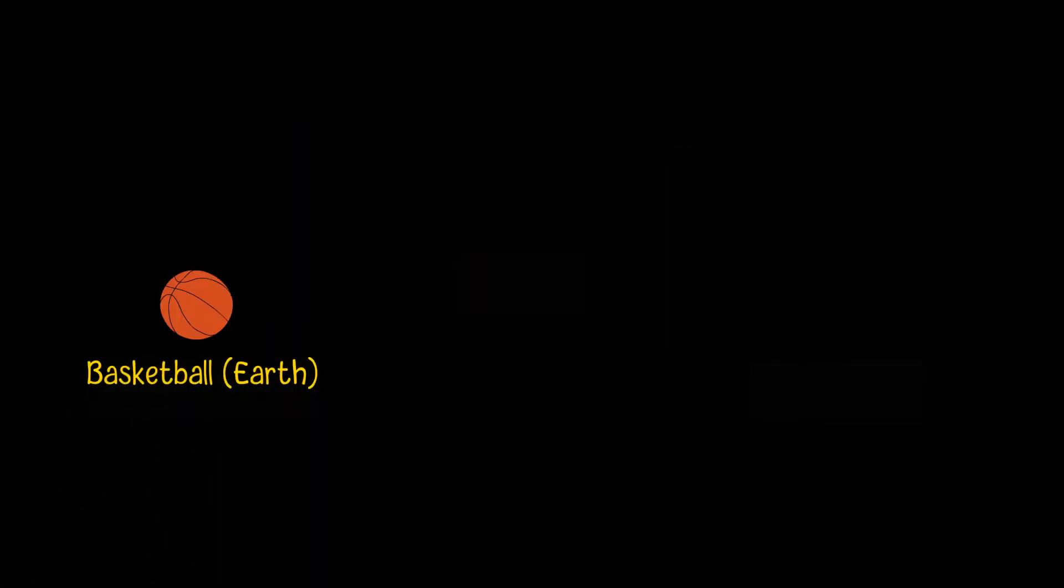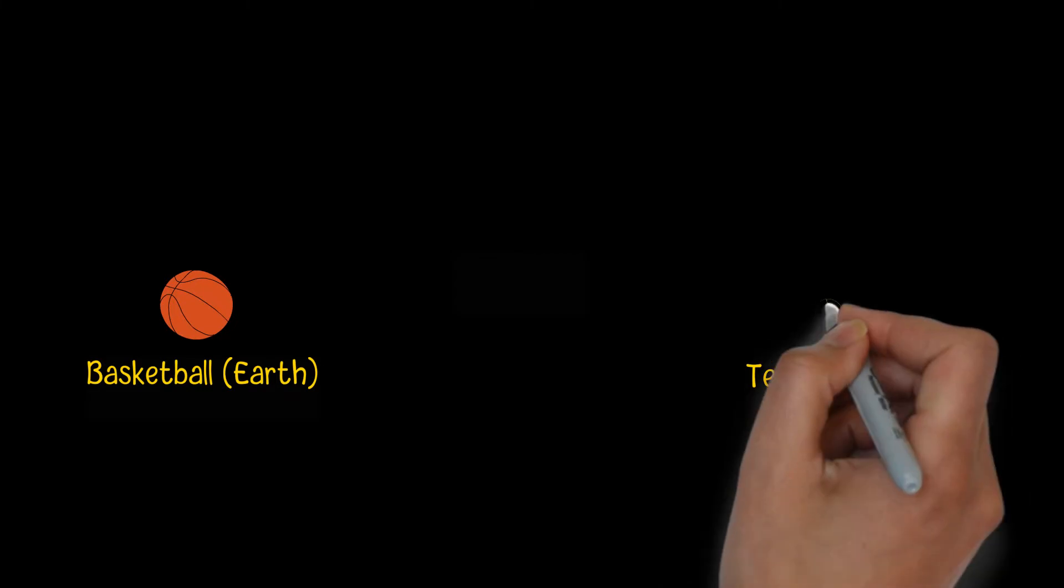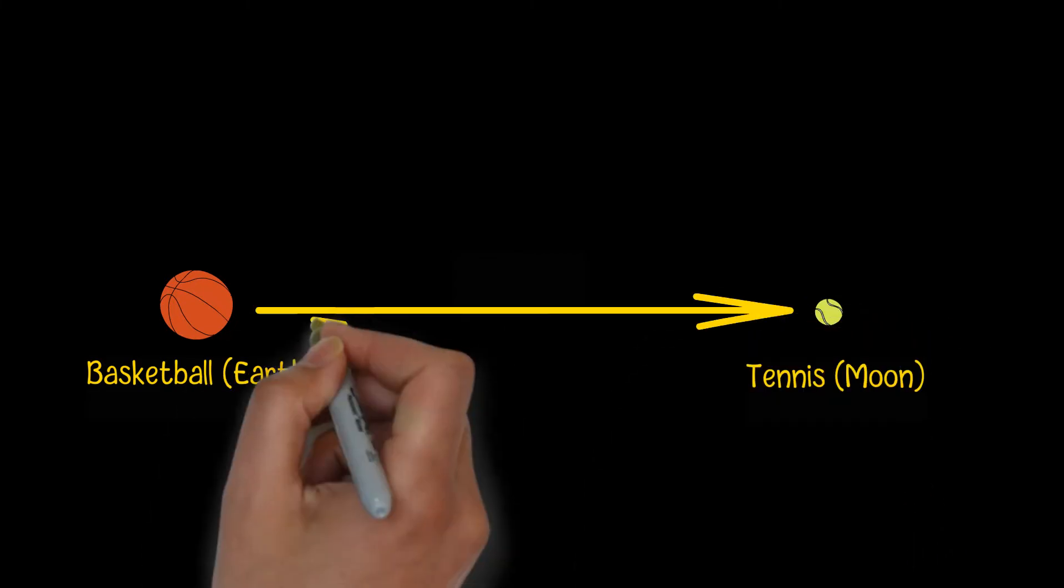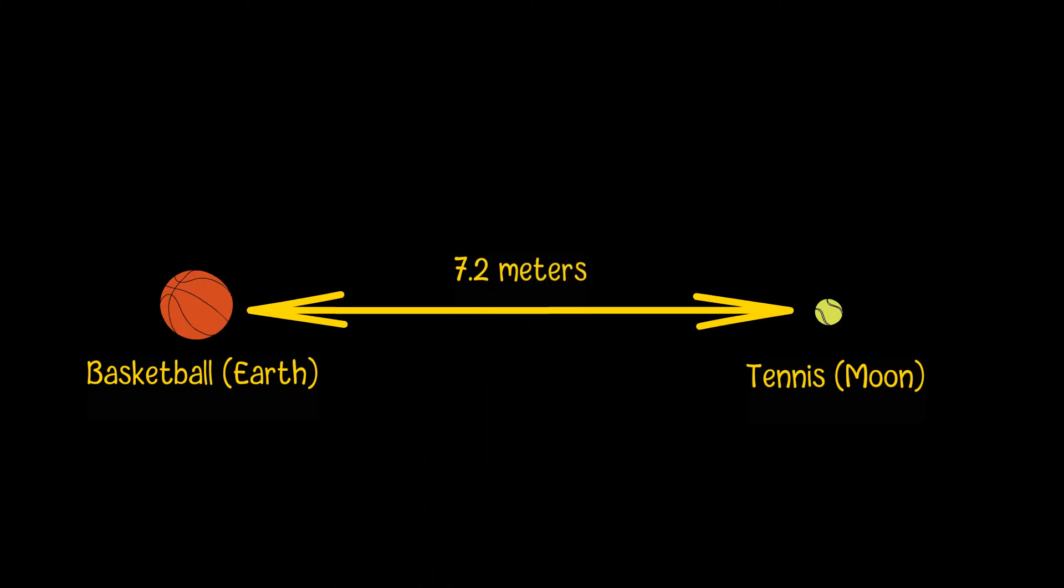If you put a basketball on the ground as Earth and use the same ratio as the real distance between Earth and the Moon, the Moon would be a tennis ball located 7.2 meters away.